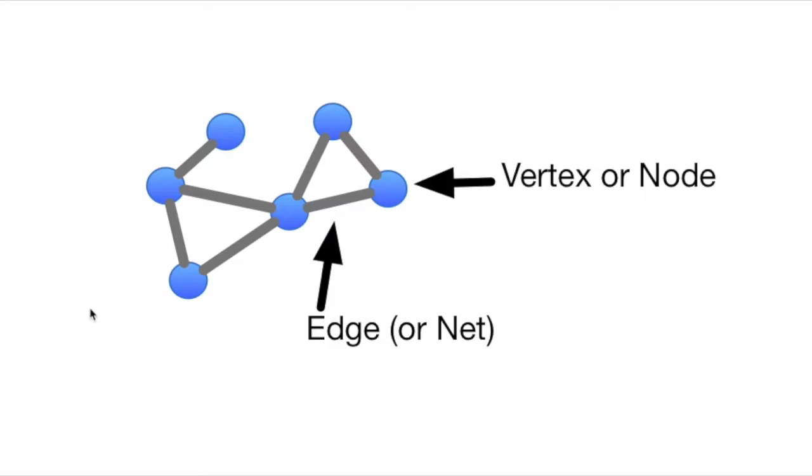So first, some of the basic terminology. You've got vertices, these little blue dots here, edges marked in grey, pretty straightforward. You can usually move stuff around like this.